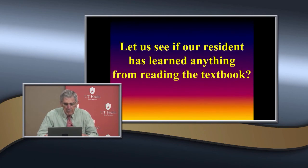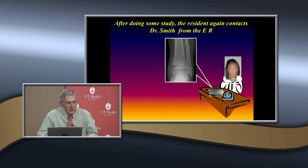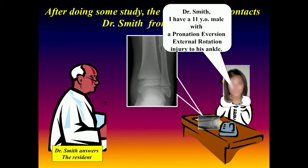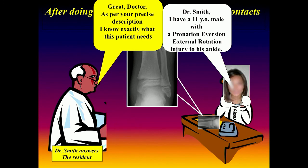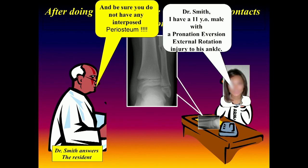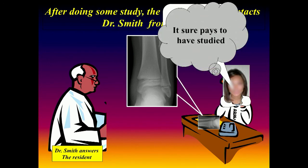Returning to our case: after further study, the resident calls Dr. Smith and correctly states, 'I have an 11-year-old with a pronation eversion external rotation injury to his ankle.' Dr. Smith responds positively: with that precise description he knows exactly what the patient needs - attempt closed reduction but be sure there is no interposed periosteum. The resident recognizes that it pays to study the proper classification system. Thank you.